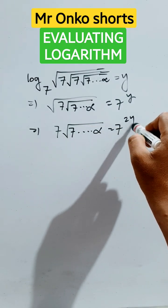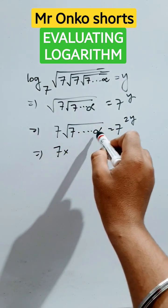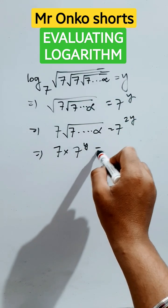Now 7 into... this part up to infinity is nothing but the reflection of this part. That can be written as 7 to the power y equals 7 raised to the power 2y.